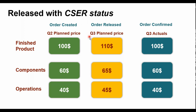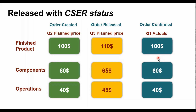If we look at the Q3 plan price, it has been slightly increased by $10. In this particular scenario, say you created the production order or process order in the Q2 period, and the release of the order happened in Q3. But during release, the system is not going to read the updated price — because once the order is created, it reads the plan price based on that particular period. So Q2 has the standard price of $100, while Q3 has been updated to $110. When you do the confirmation in Q3, it picks values from the Q2 plan price — $100, with $60 for components and $40 for operations.